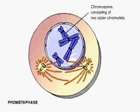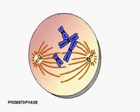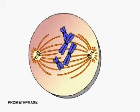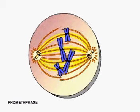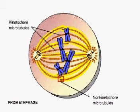During prometaphase, the nuclear envelope breaks into fragments. Some of the spindle fibers reach the chromosomes and attach to kinetochores, structures made of proteins and specific sections of DNA at the centromeres. Non-kinetochore microtubules overlap with those coming from the opposite pole.